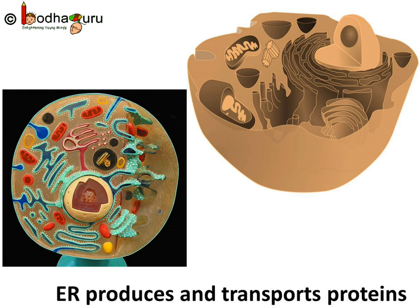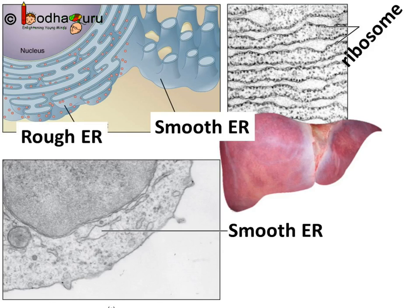So it is literally a network of factories that produces protein or fat and transports them to wherever it is needed. Fascinating! And that is not all. In our liver cells, also in all animals that have a vertebral column or spinal cord, the smooth endoplasmic reticulum plays a crucial role in detoxifying many poisons and drugs. This means it neutralizes many harmful substances which could harm us or may kill us.